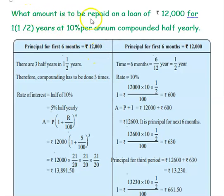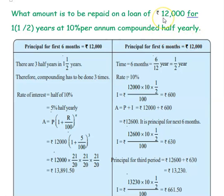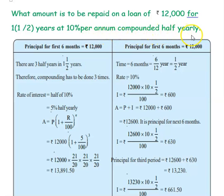Question is: what amount is to be repaid on a loan of Rs. 12,000 for one and a half years at 10% per annum compounded half yearly? So, given is the principal is 12,000, the time is one and a half years and 10% rate of interest per annum. But it has to be compounded half yearly. So, we want to find the amount.